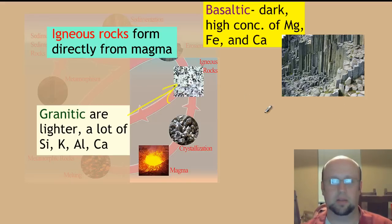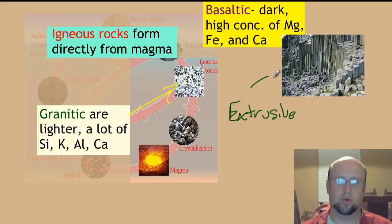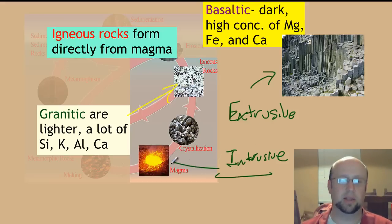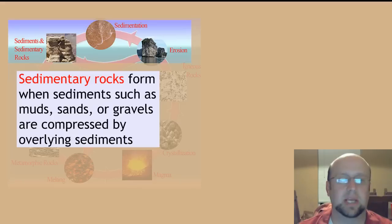Going back to what we had a couple slides ago, we've got extrusive, where they're formed on the surface. A lot of times these are basaltic type rocks. Then we've got intrusive, when it's formed underground. Typically you're going to get a lot of that as granitic rocks. They can be either, though. You can have extrusive granitic rocks or intrusive basaltic rocks, so there's some overlap between them.